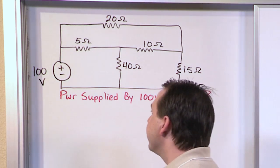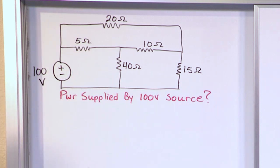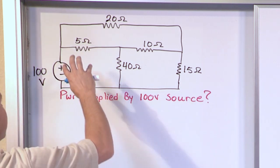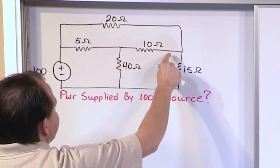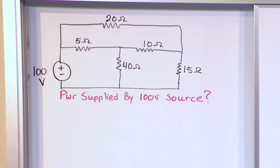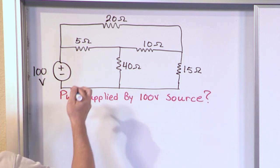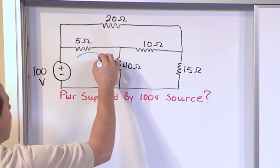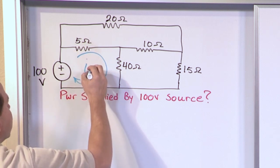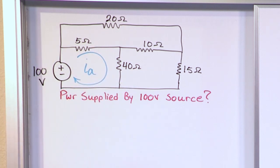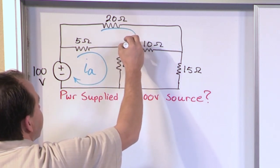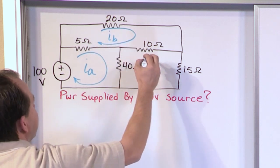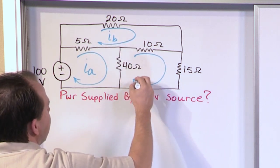We're going to use mesh currents, so the first thing we need to do is identify where our meshes are. Think of the circuit as a cookie cutter — a mesh will be here, a mesh will be this whole rectangular region at the top, and a mesh will be this whole rectangular region on the side. We need to label these, and I always go clockwise: I sub A, I sub B, and then I sub C.